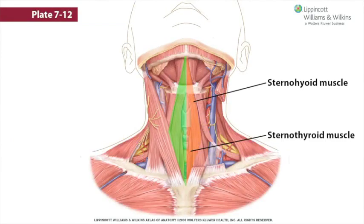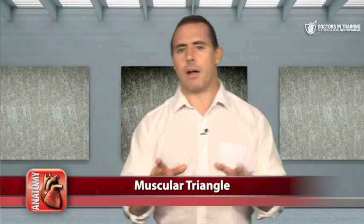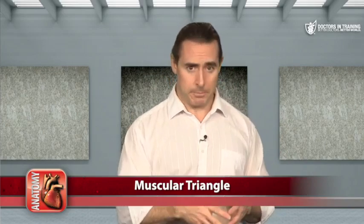The floor of the muscular triangle is formed by the sternohyoid and sternothyroid muscles, which cover the trachea, the cricoid cartilage, the thyroid cartilage, and the thyroid gland. The thyroid gland is one of the larger endocrine glands of the body. It is located at the level of vertebra C5 to T1, and is composed of a pair of lobes located anterolaterally to the trachea and the larynx, connected by an isthmus that runs across the trachea. Its shape has been compared to that of a butterfly and a bowtie.